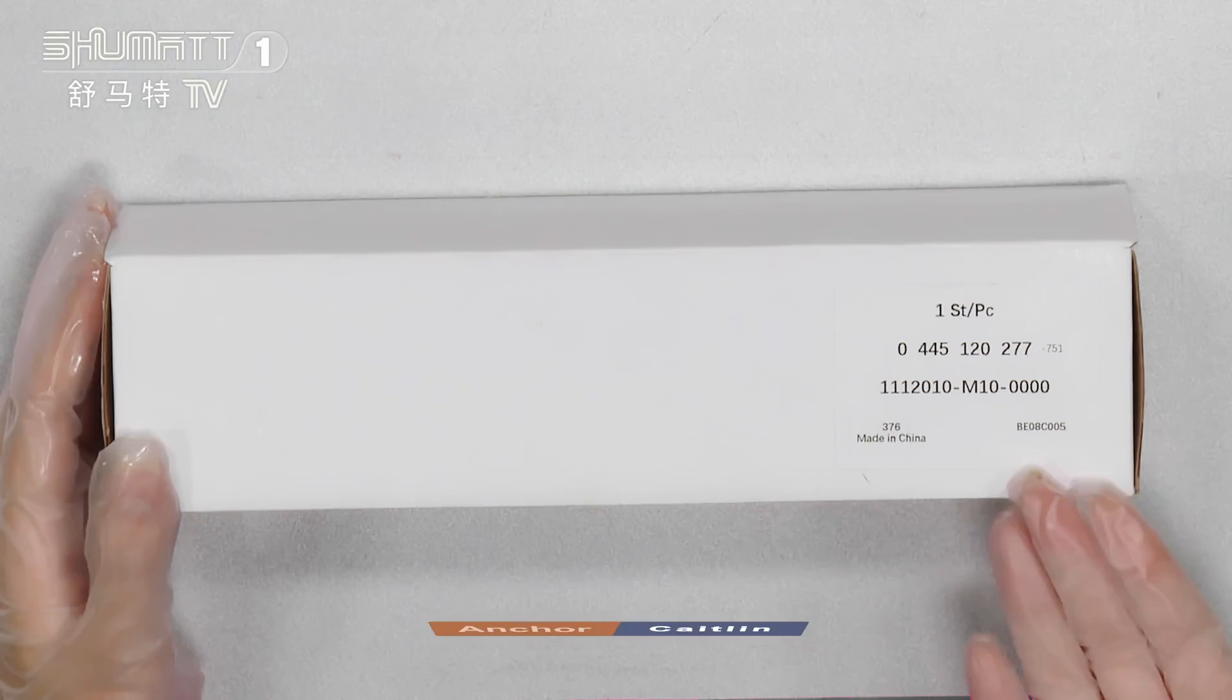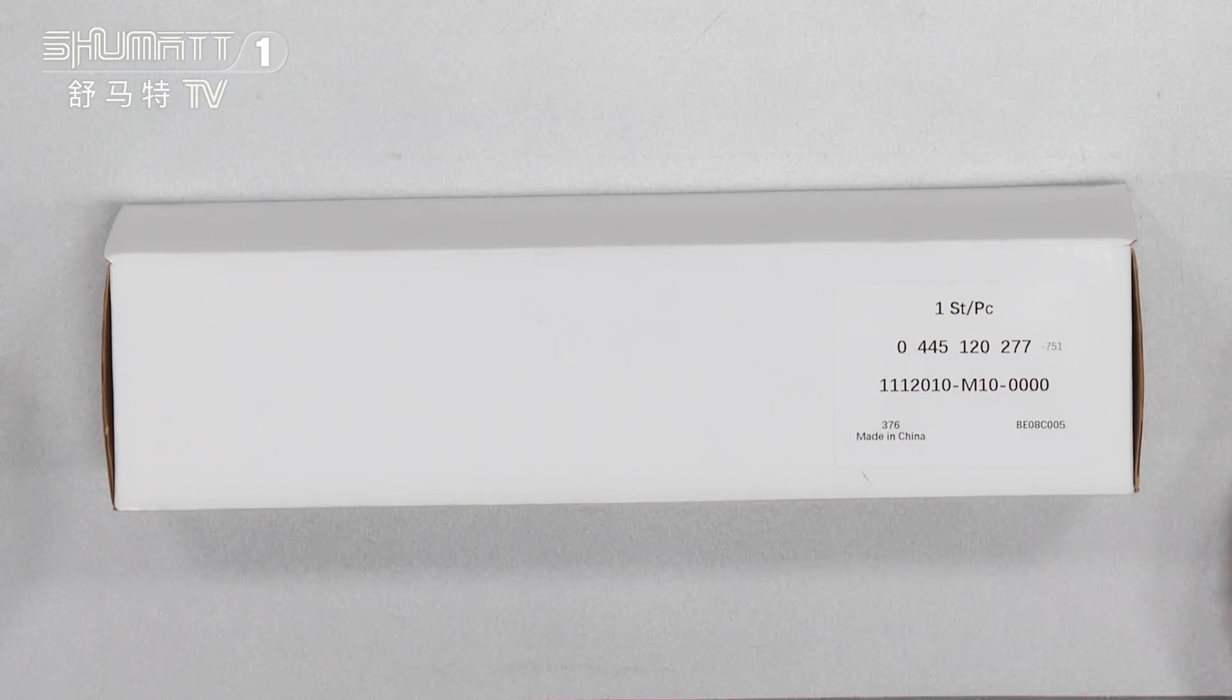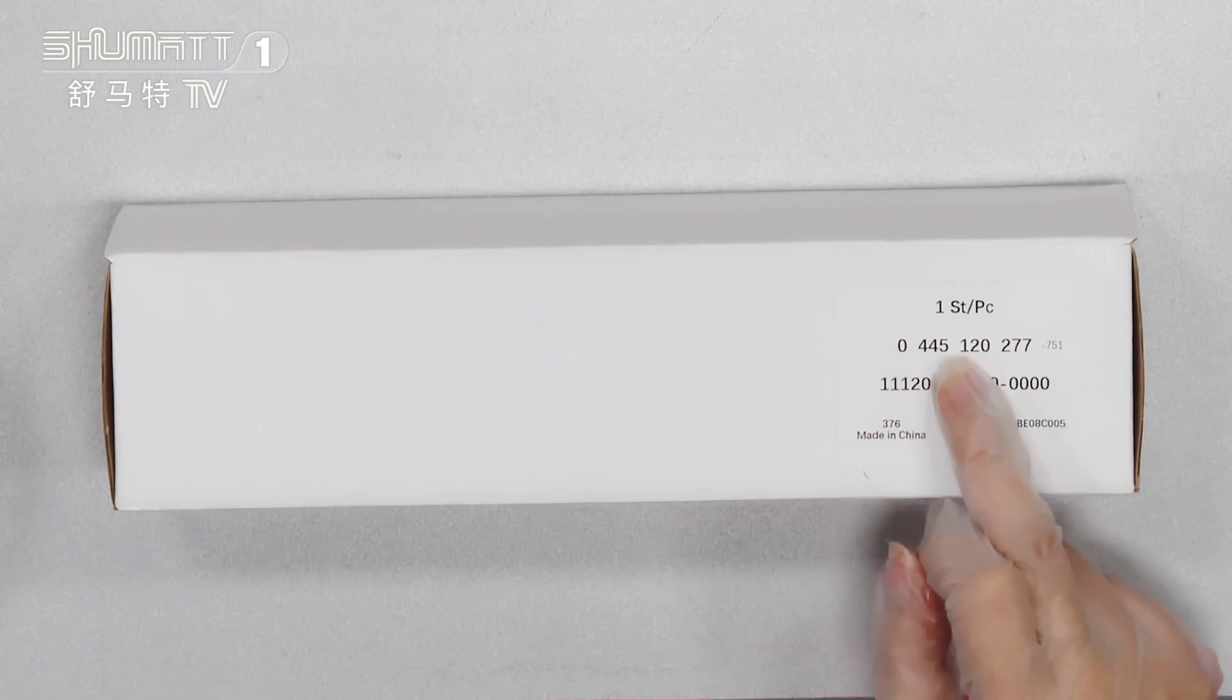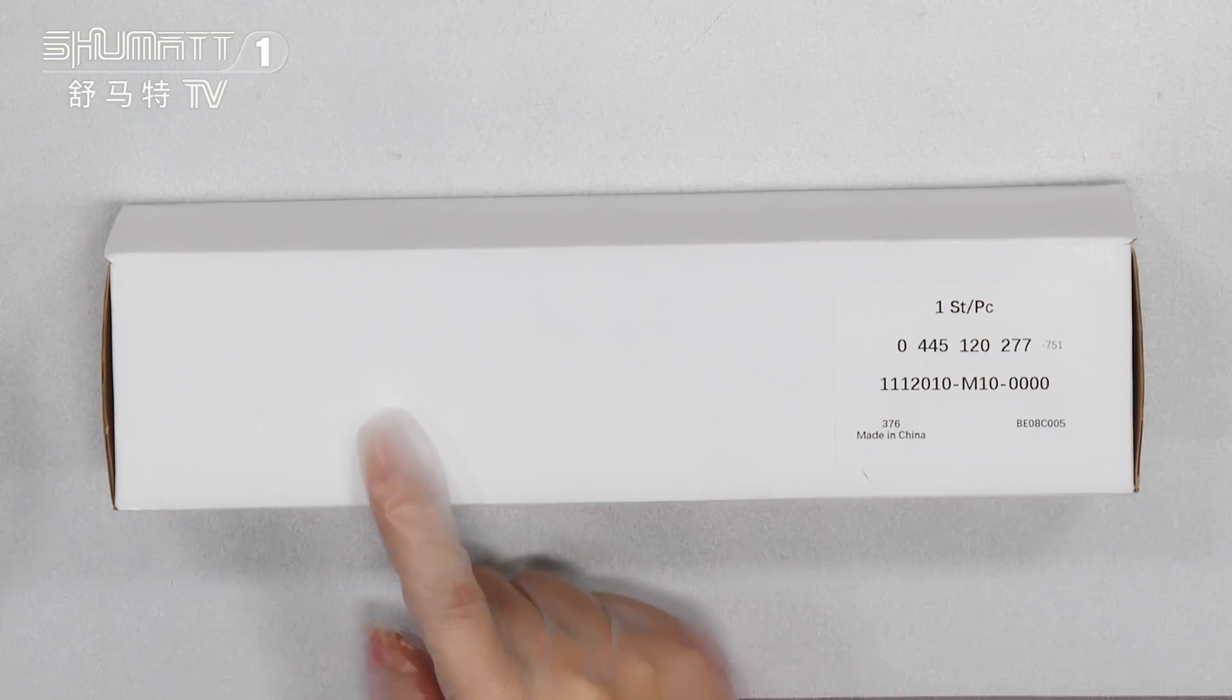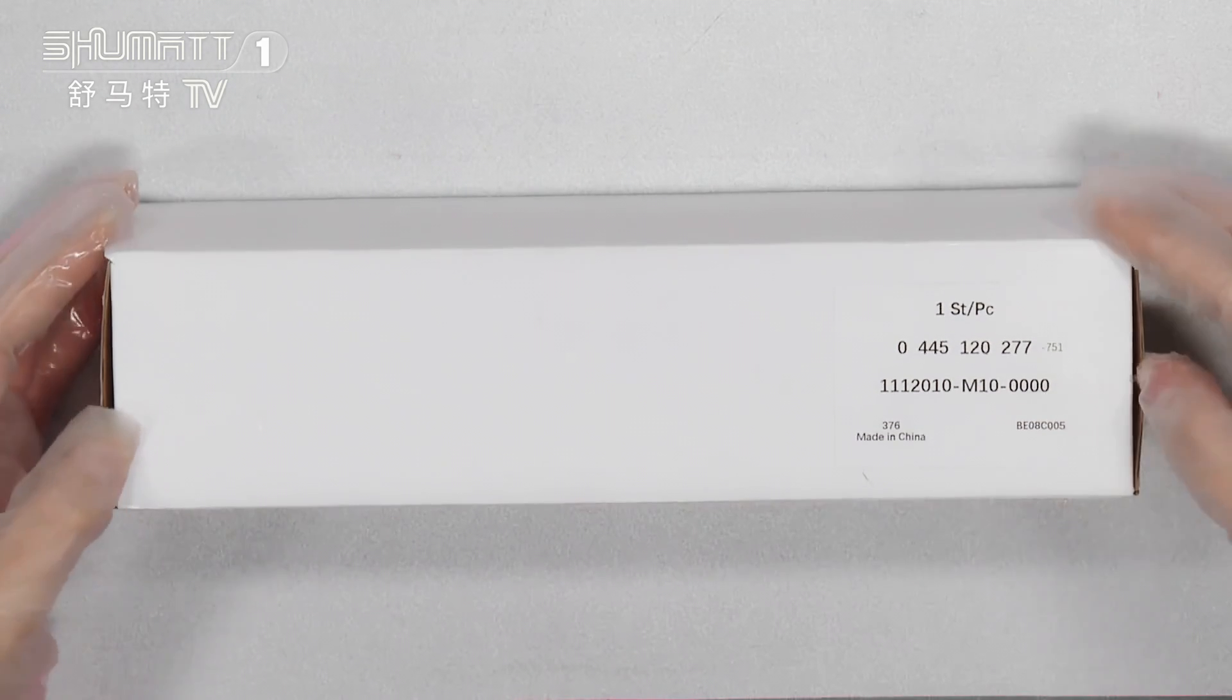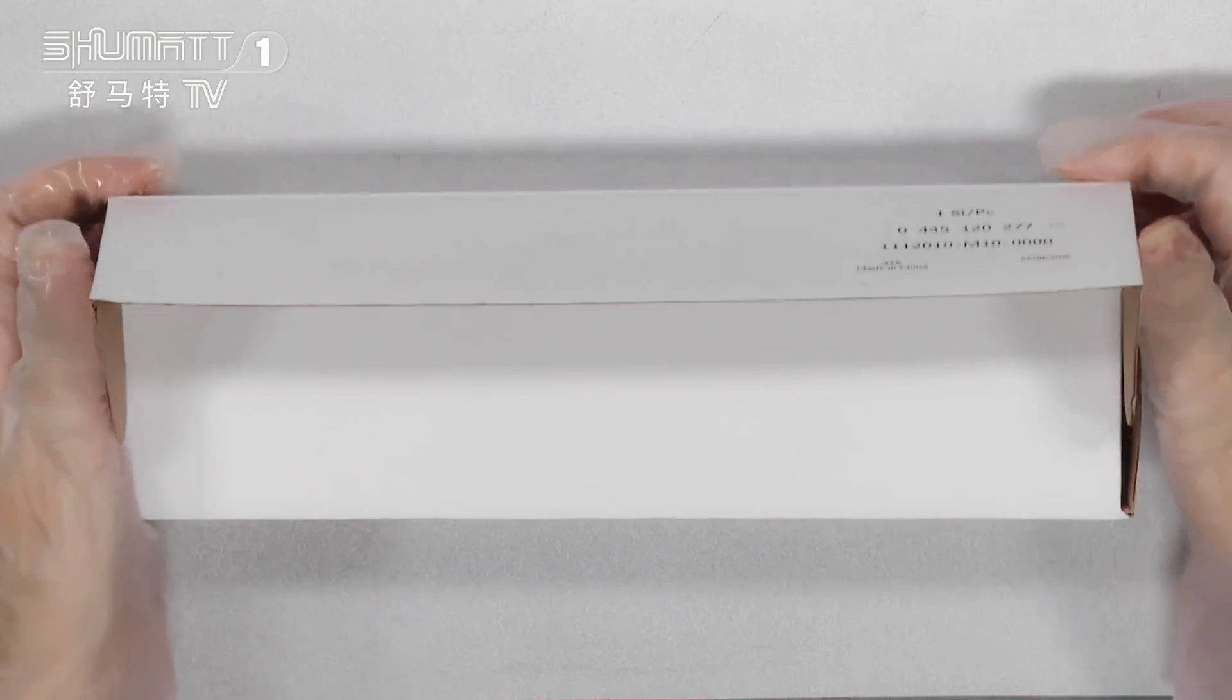You can look at it here. This is the neutral white box, label, one set per piece, product code 045120277. And other information, if you want to print with your own logo, the label, packaging bag, and so on, contact us to customize the services for you.